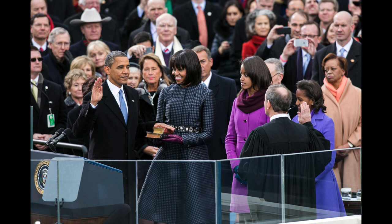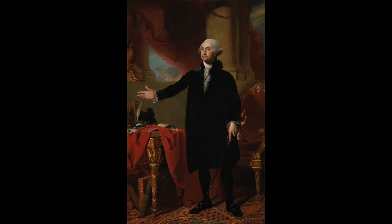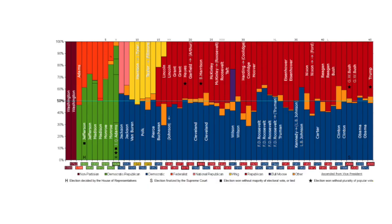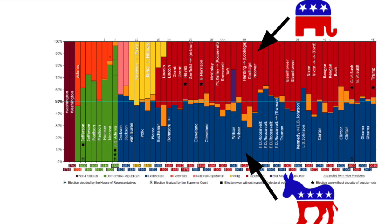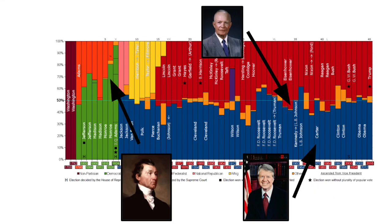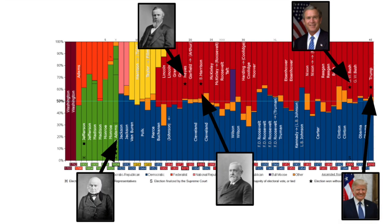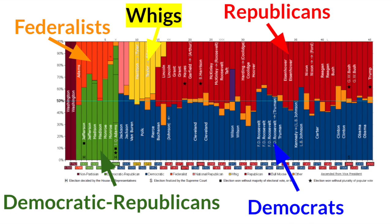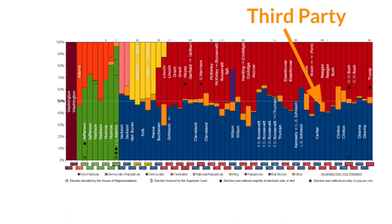Only once in American history has the United States elected a president who was not a member of any political party: George Washington. The first U.S. president was elected twice with little to no opposition. But following America's only independent presidency, the rest of the country's history has been one of two parties. This chart shows it pretty well. Each color represents a political party, and the longest bar each year designates the winner of the presidency. First, the two parties were the Federalists and the Democratic-Republicans, then the Democrats and the Whigs, and finally the Democrats and Republicans. The orange and purple bars show the percent of the vote that went to a third-party candidate — some years significantly larger than others.